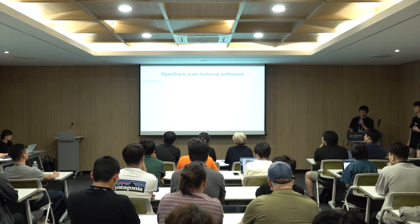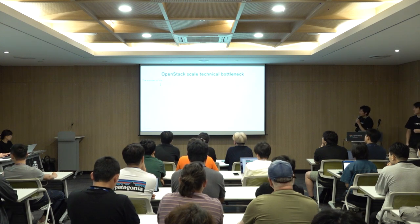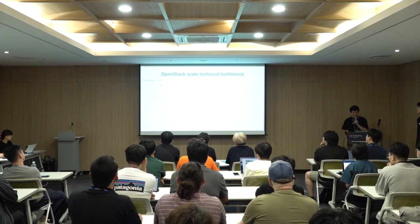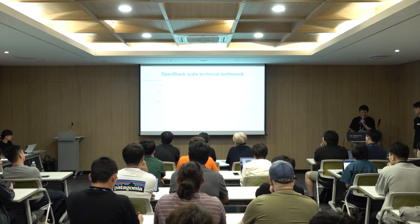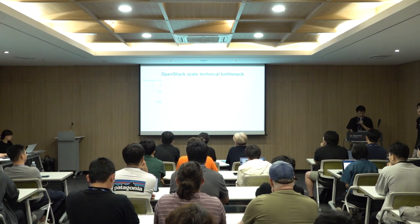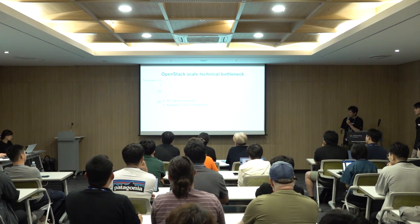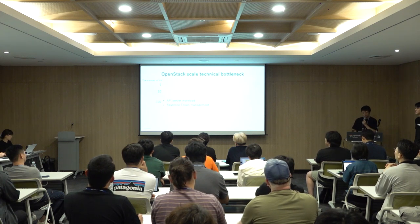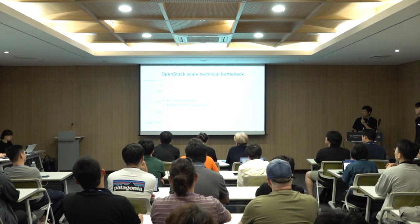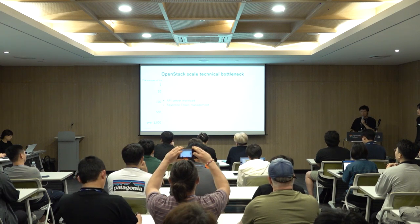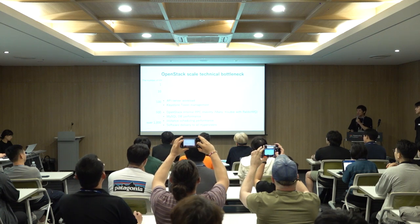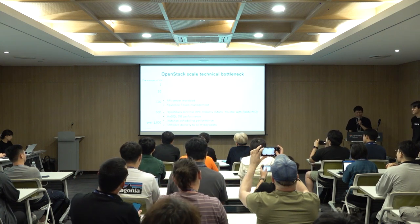Here is the OpenStack scale technical bottleneck compared to the number of hypervisors. At one — no issue. At ten — of course, no issue. At 100, we start hitting API server portal workload and Keystone token management issues. At 500 and over 1,000, many issues arise about technical bottlenecks.